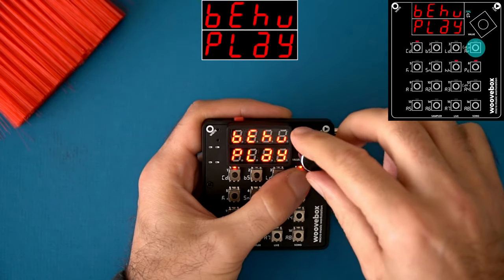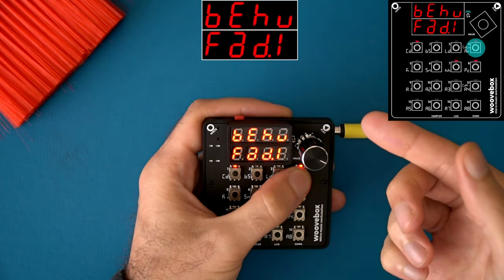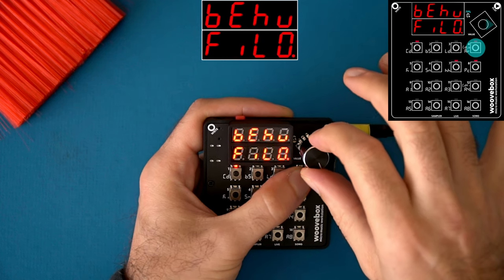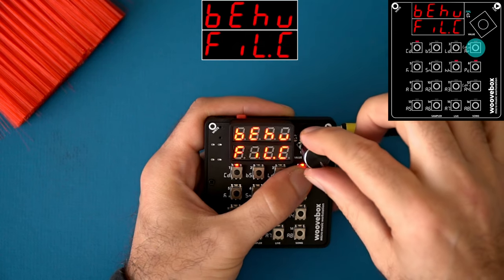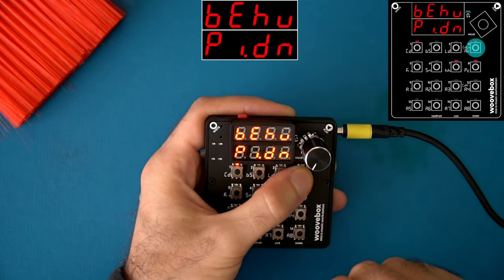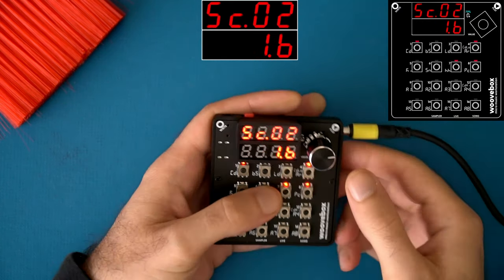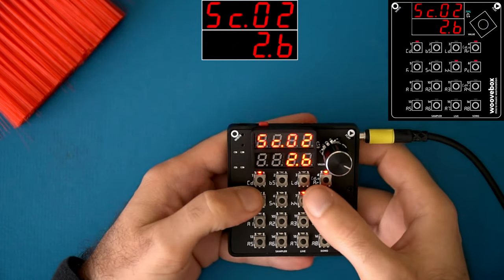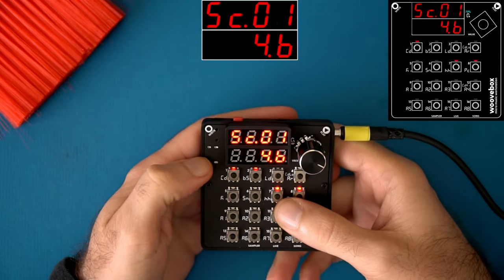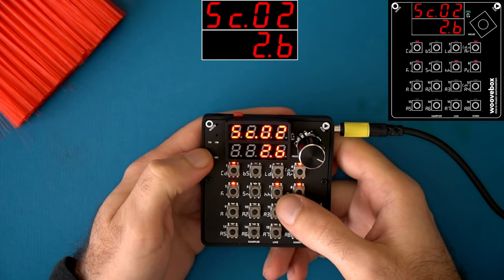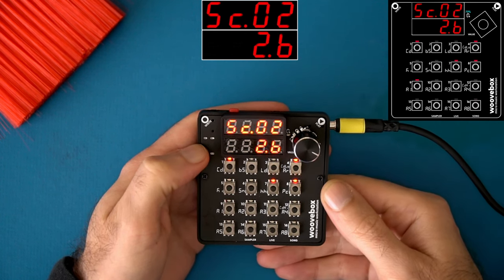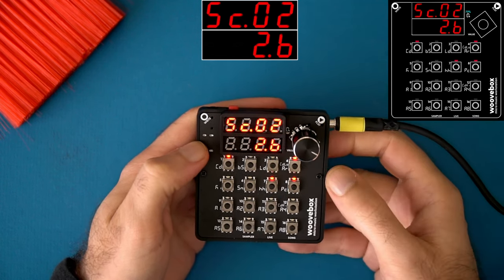You navigate the options by clicking the encoder and you select the option by turning the encoder. So the first one is just play. This one is fade in, so it will fade in the track over the course of the scene length. This is fade out. This is open the filter. This is close the filter. And this is pitch the track up one octave during the scene length. And this is pitch the track down one octave during the scene length. So let's go with fade in. So I'm going to make this two bars. Let's go to scene one, and let's go to scene two. And you see, it faded in this arp track very nicely.